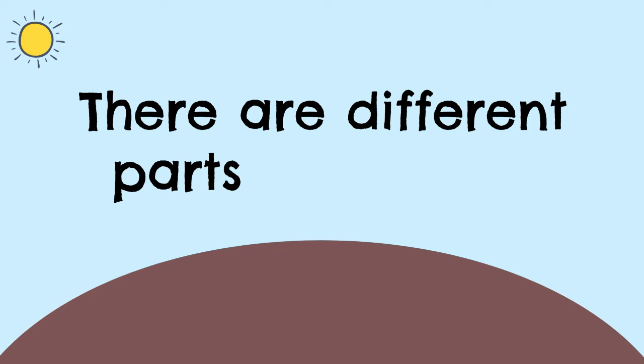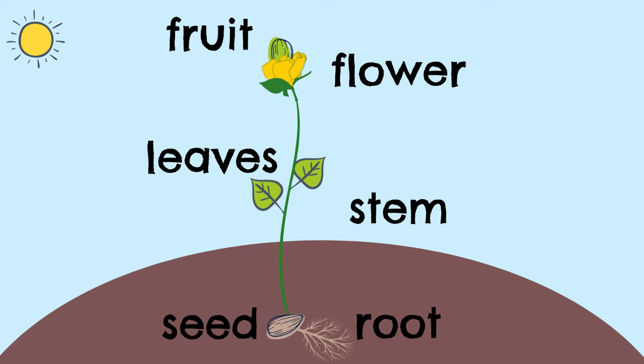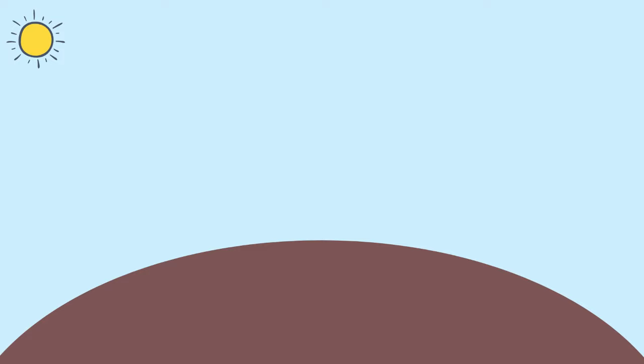There are different parts of a plant. A seed, root, stem, leaves, flower, fruit. Each part of a plant has a purpose. Each part does what it needs to do.